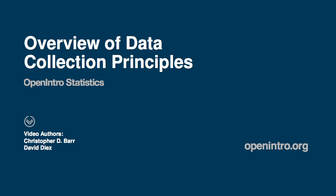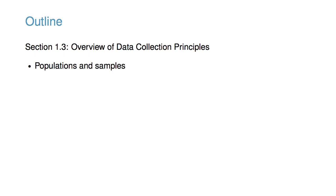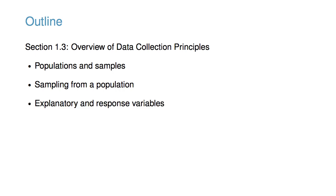This video accompanies the section Overview of Data Collection Principles in OpenIntro Statistics and provides basic tools for collecting data in such a way that the data are reliable and help achieve your desired research goals. In particular, we will learn about differences between populations and samples, and study methods of sampling from a population. We will also learn about explanatory and response variables, and contrast observational studies and experiments.